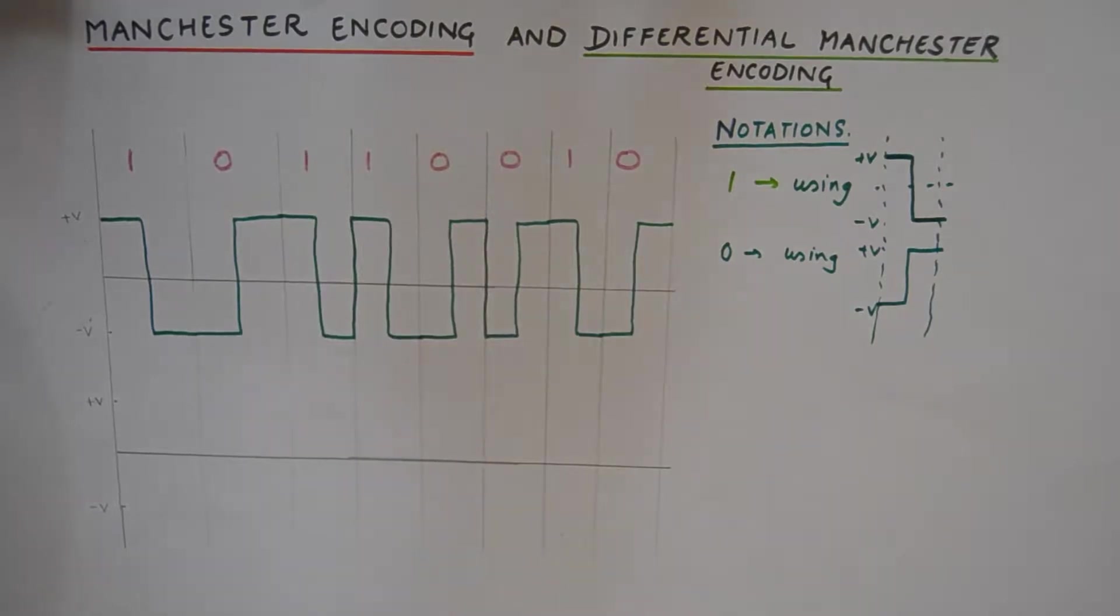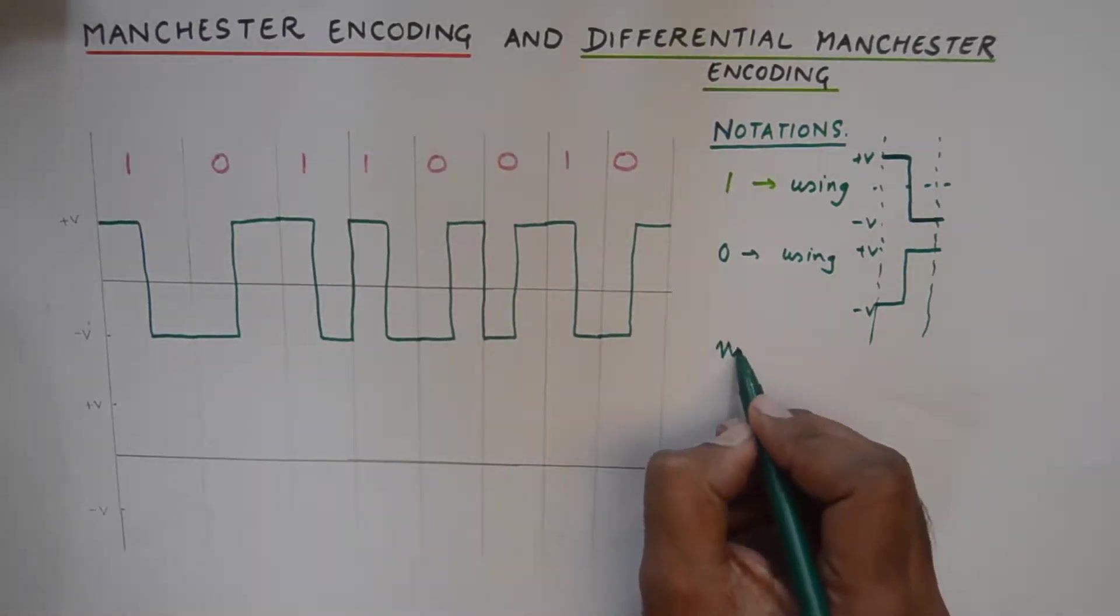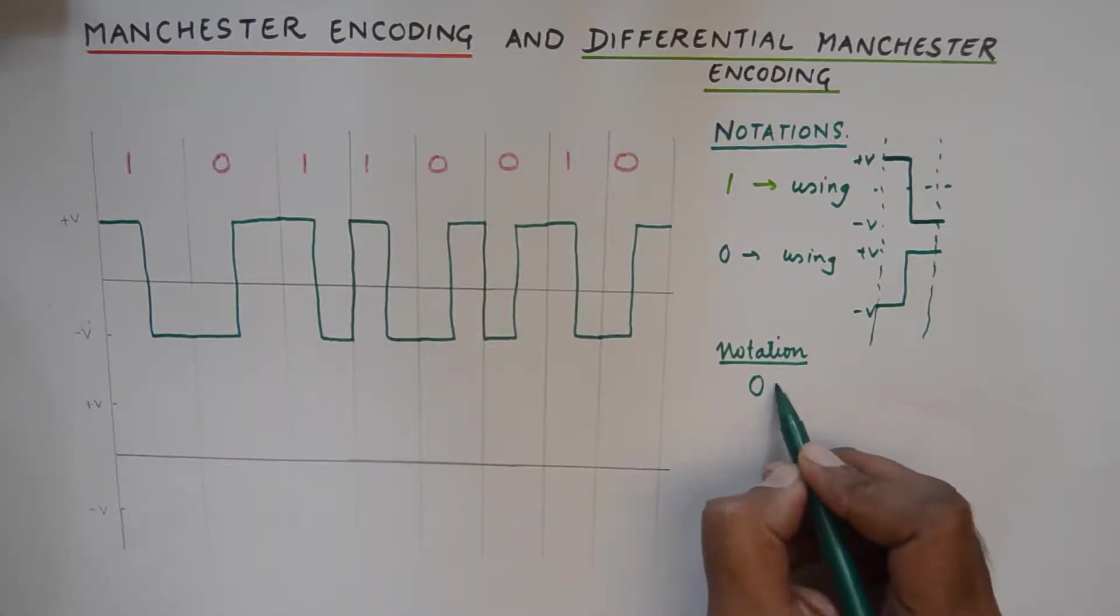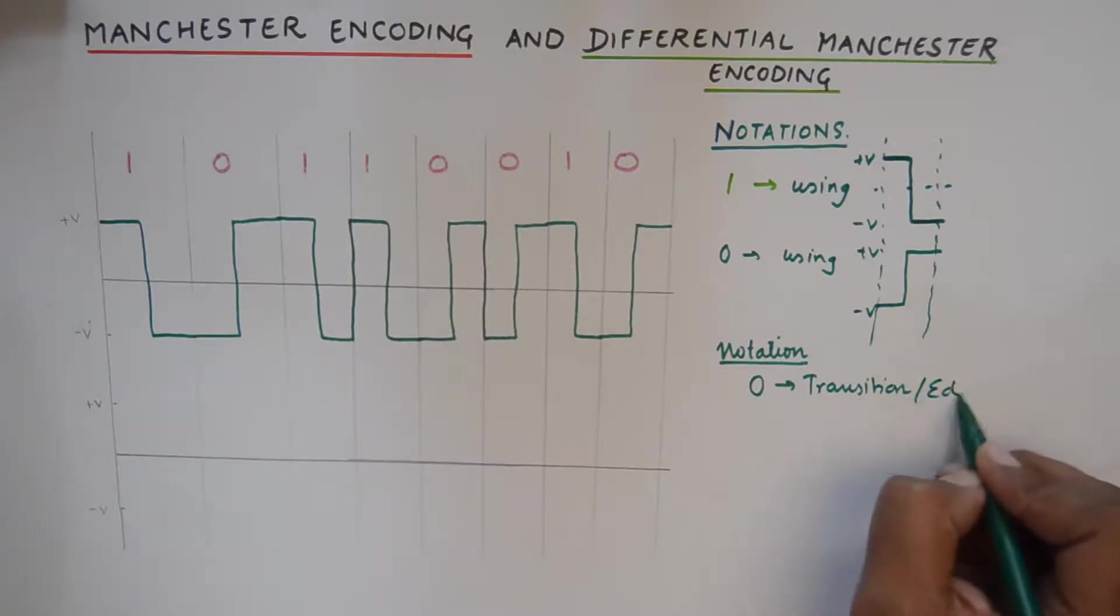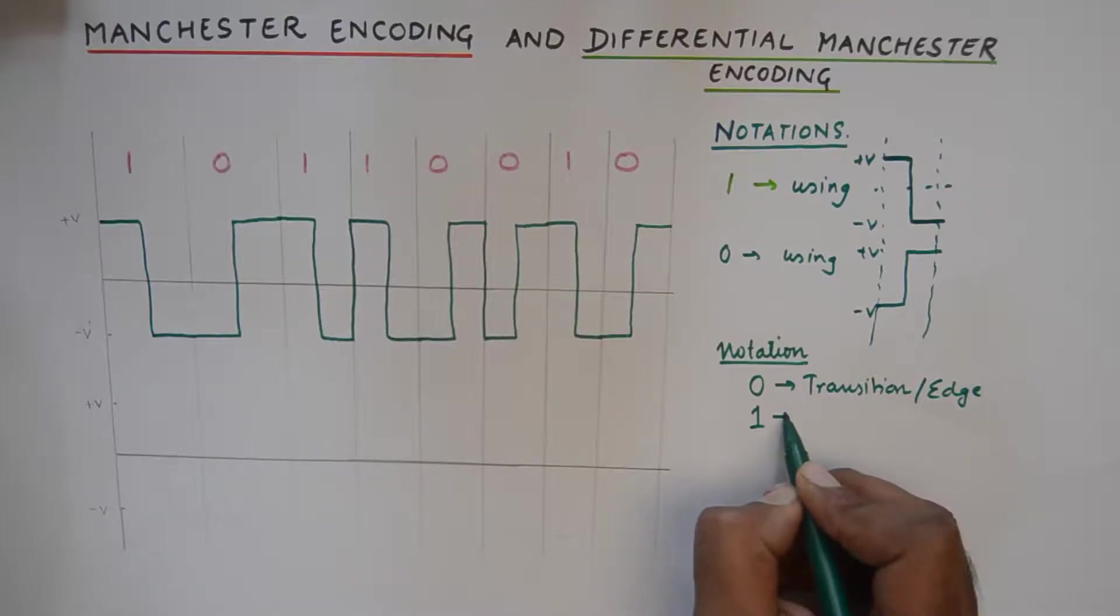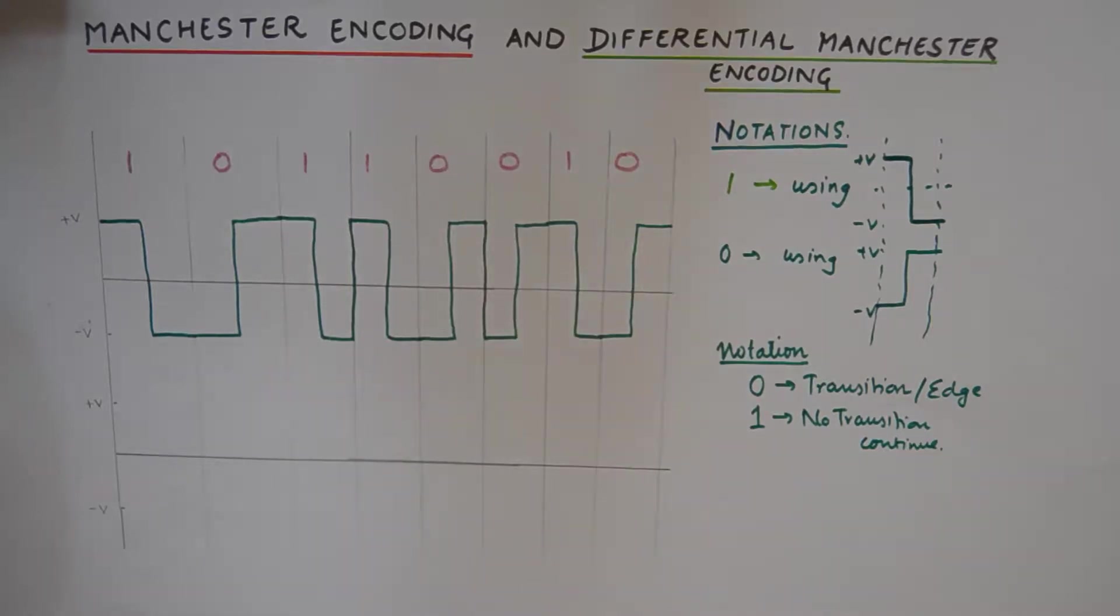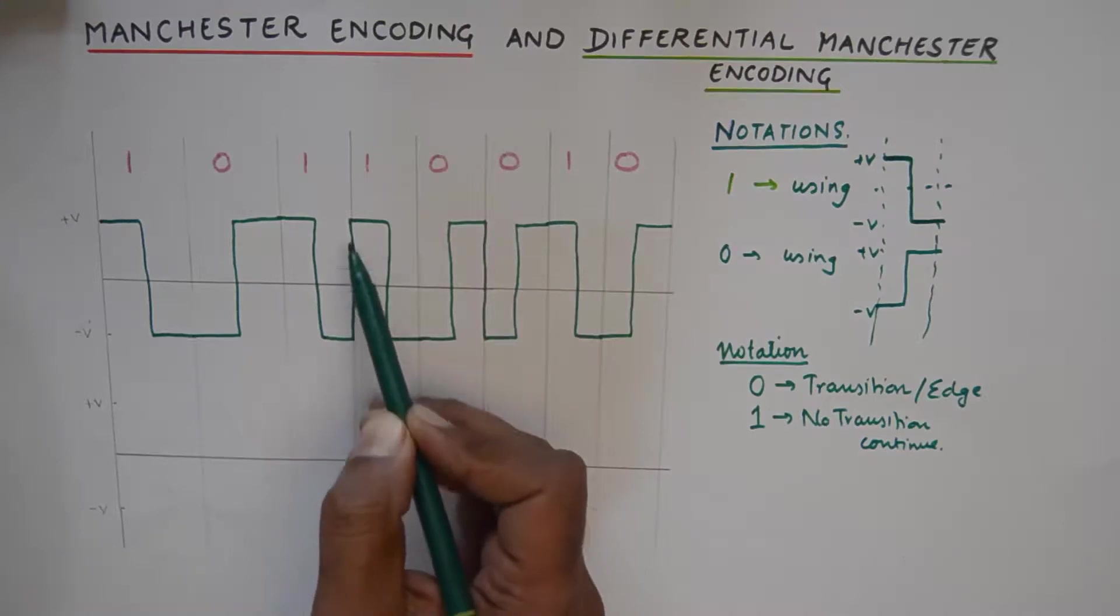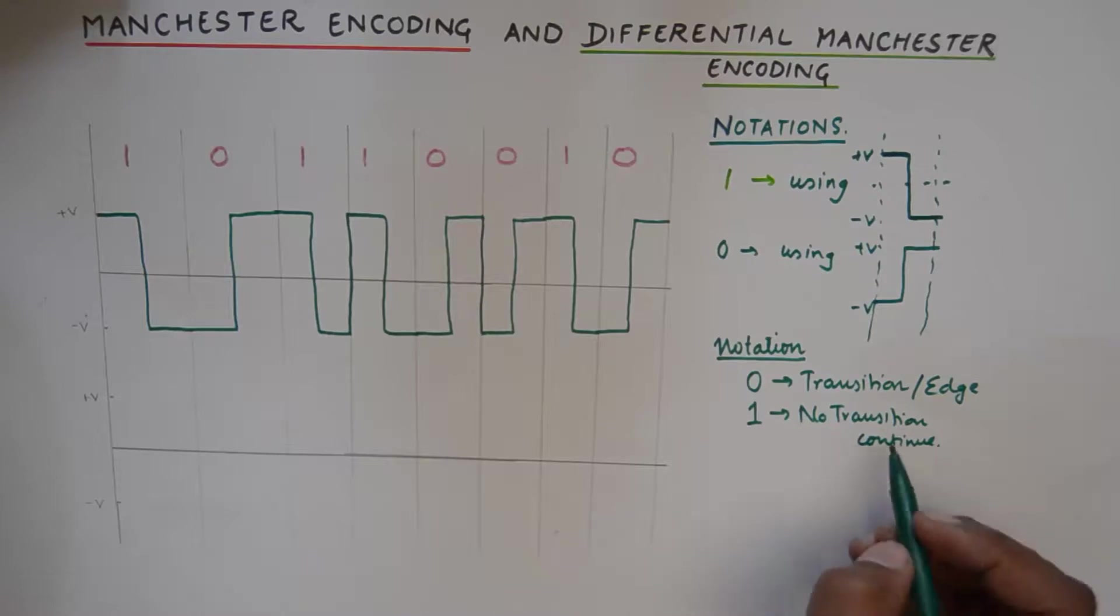So that is how Manchester encoding will be done for this code. Now if we talk about differential Manchester encoding, you need to note down its notation very carefully. The notation says that there will be a transition at zero or you'll need to make an edge at zero, and at one there will be no transition or you can continue from where you left off in the previous bit. So zero will have transitions and one will not have transitions, it will go continuous.